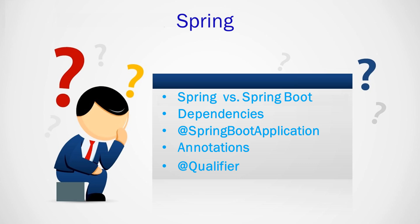The @SpringBootApplication annotation is the main annotation present in the main class. It consists of three annotations internally: @SpringBootConfiguration, @EnableAutoConfiguration, and @ComponentScan. Together they auto-configure all the required parts of the application.